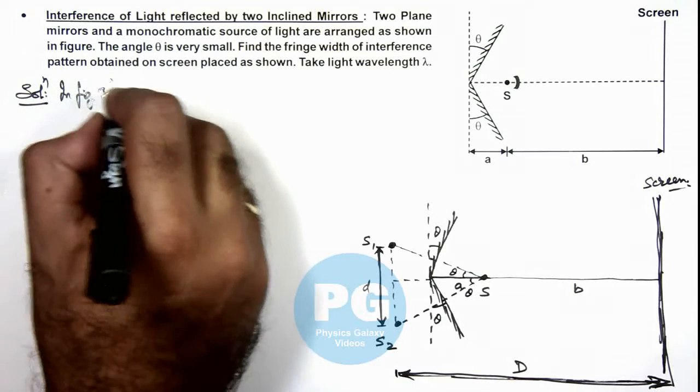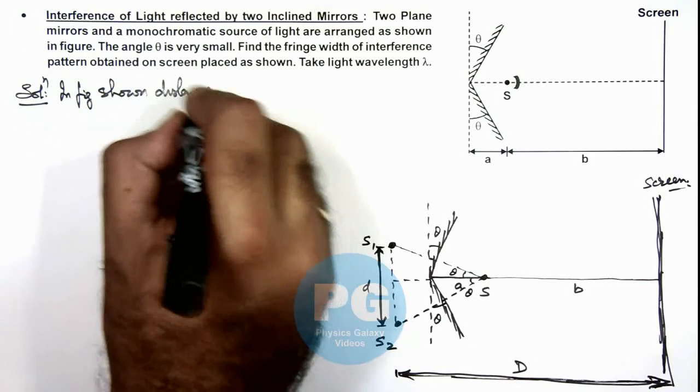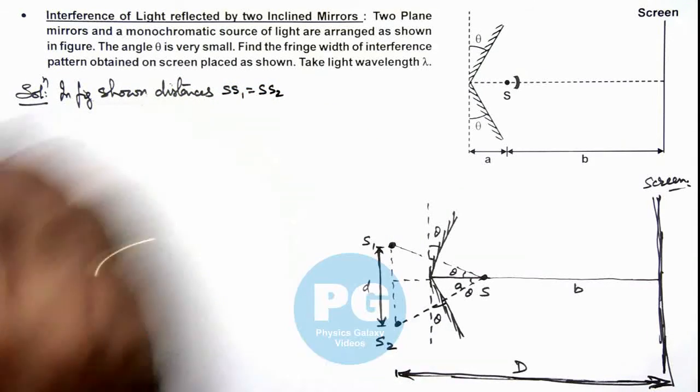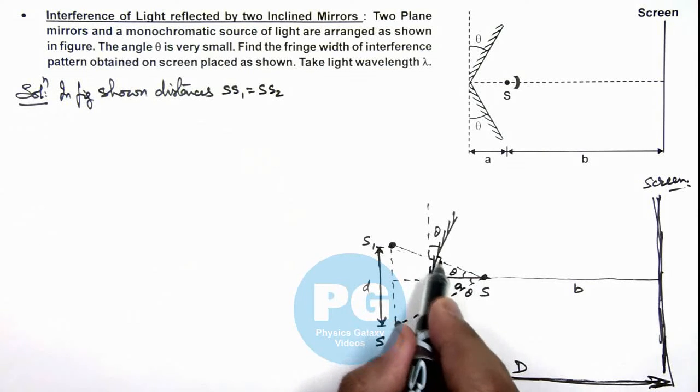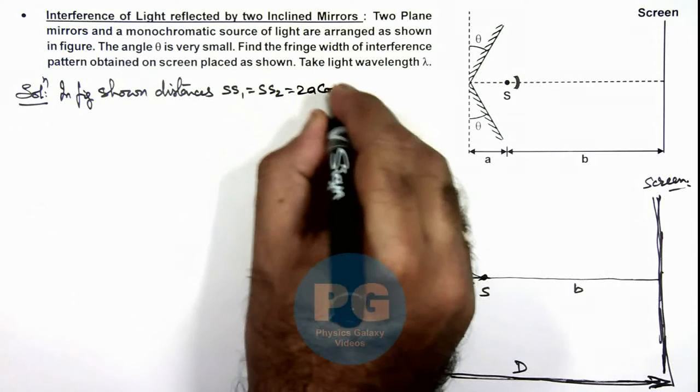Distance S-S1 is equal to S-S2, and this distance will be equal to, if this is a, this distance is a cos theta, so this will be 2a cos theta.